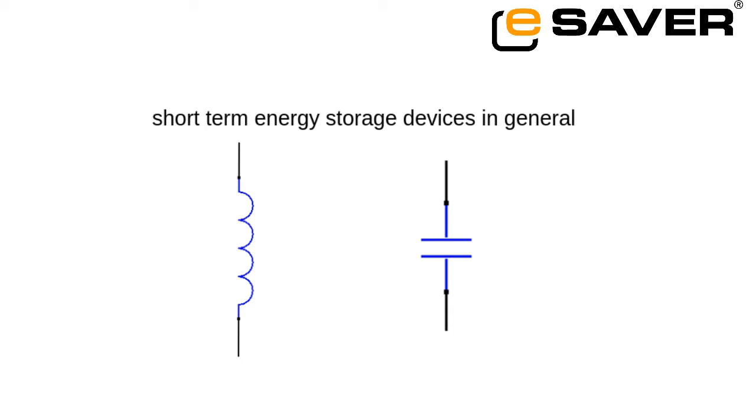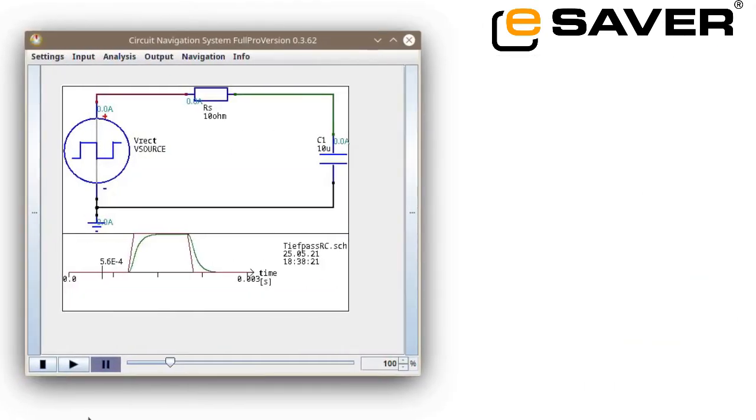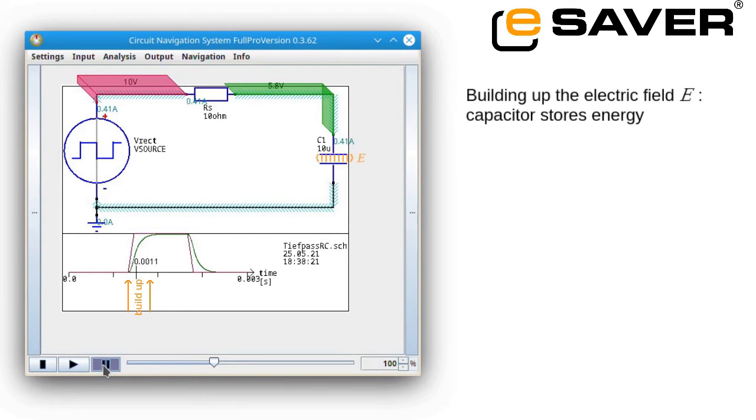One possibility is to use a capacitor. For this, let's have a look at a circuit simulation in the circuit navigation system. We see here that the voltage drops across the capacitor and current flows into the capacitor. In other words, energy is put into the capacitor during this process. This causes the capacitor to build up an electric field. That's how we can store energy in the electric field.